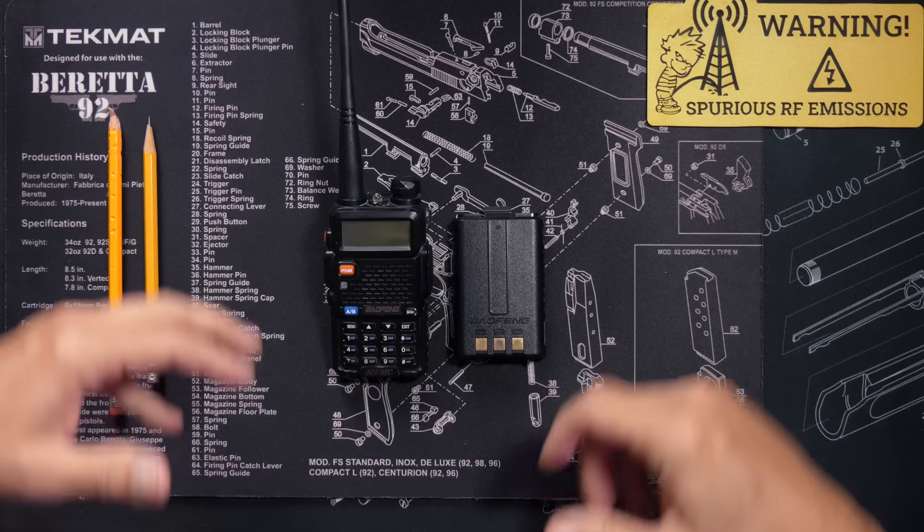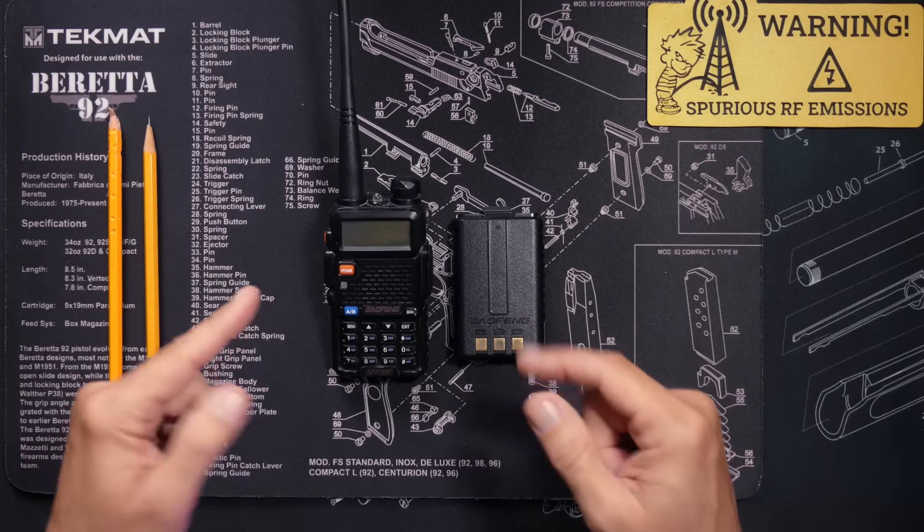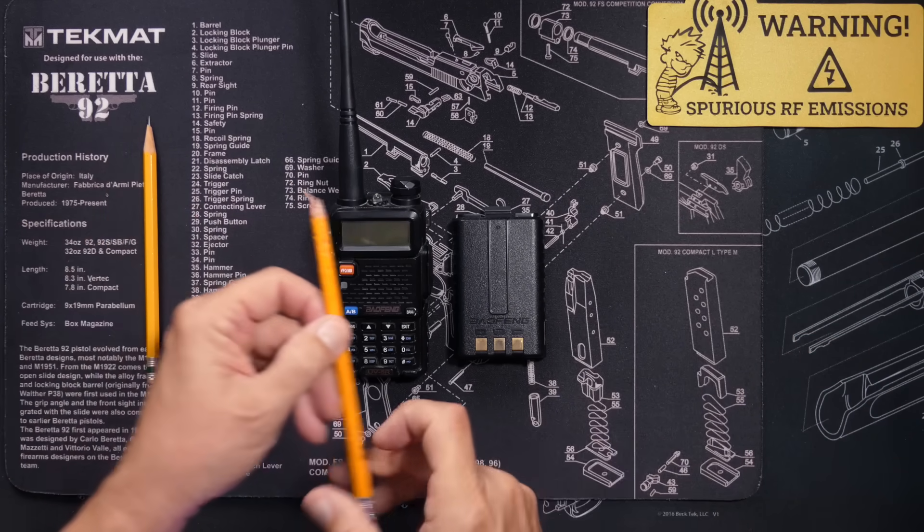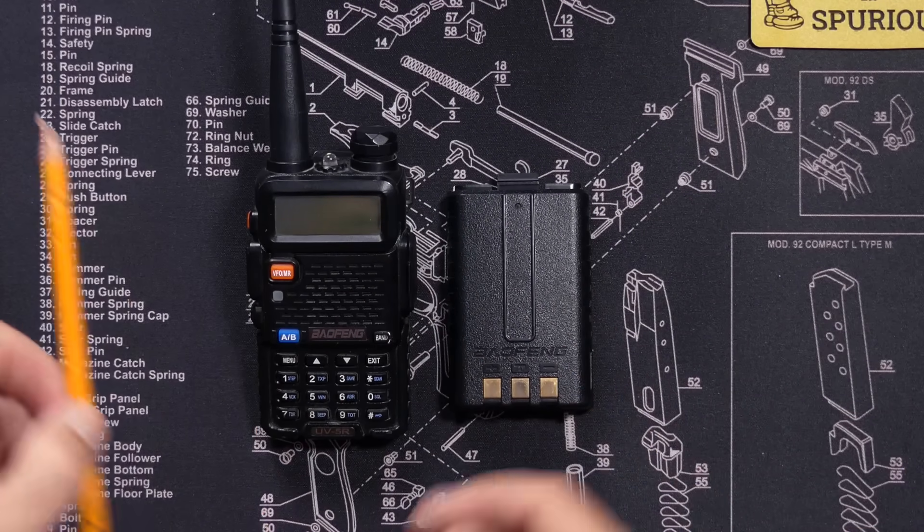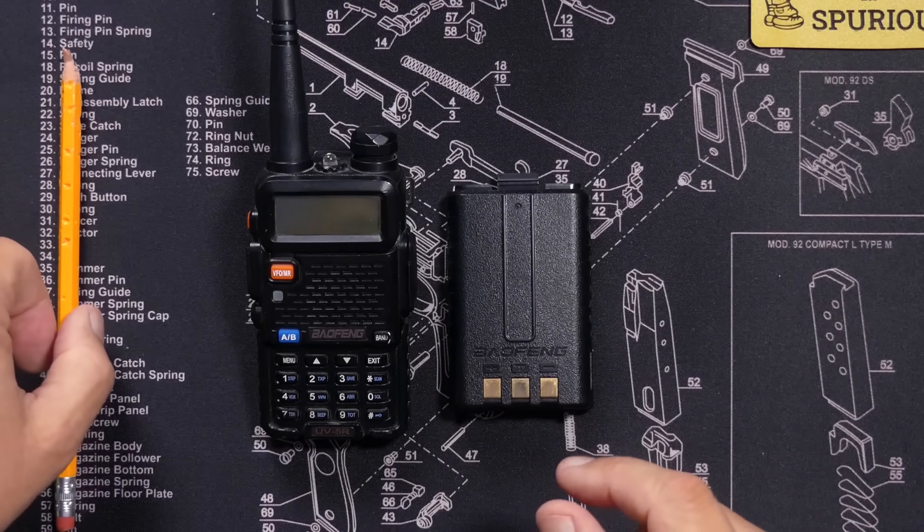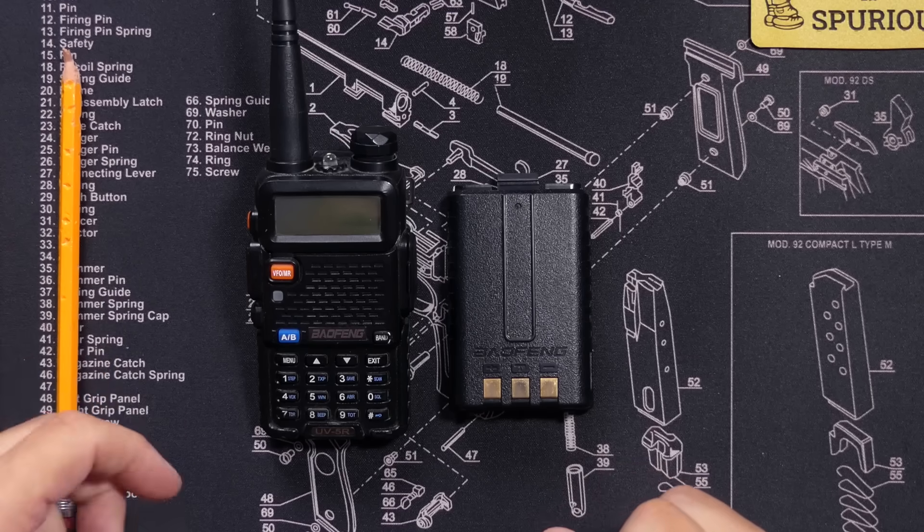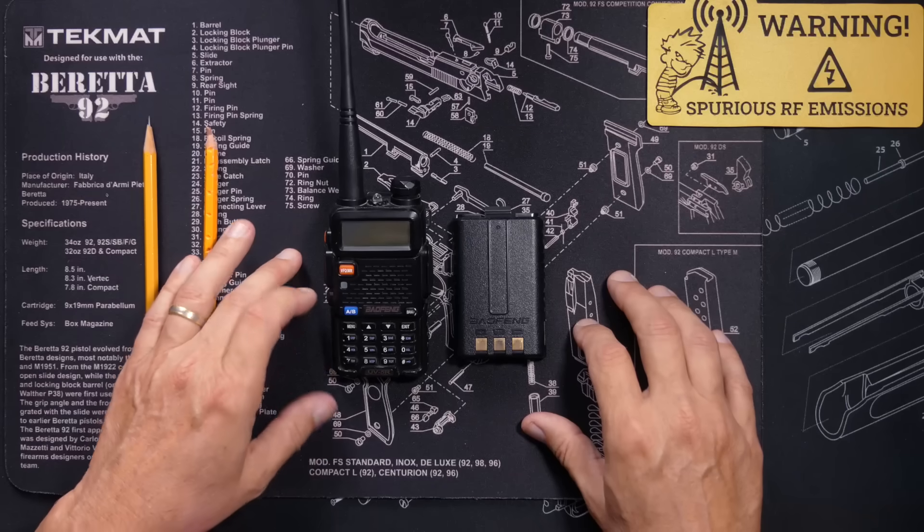However, if you are new to the exciting and dynamic world of GMRS radio, ham radio, or even CB radio, then stick around because you might just learn something. As you can see, for demonstration purposes, I am using a Baofeng UV-5R, but regardless, these techniques I am about to teach you apply to all handheld walkie-talkie radios.